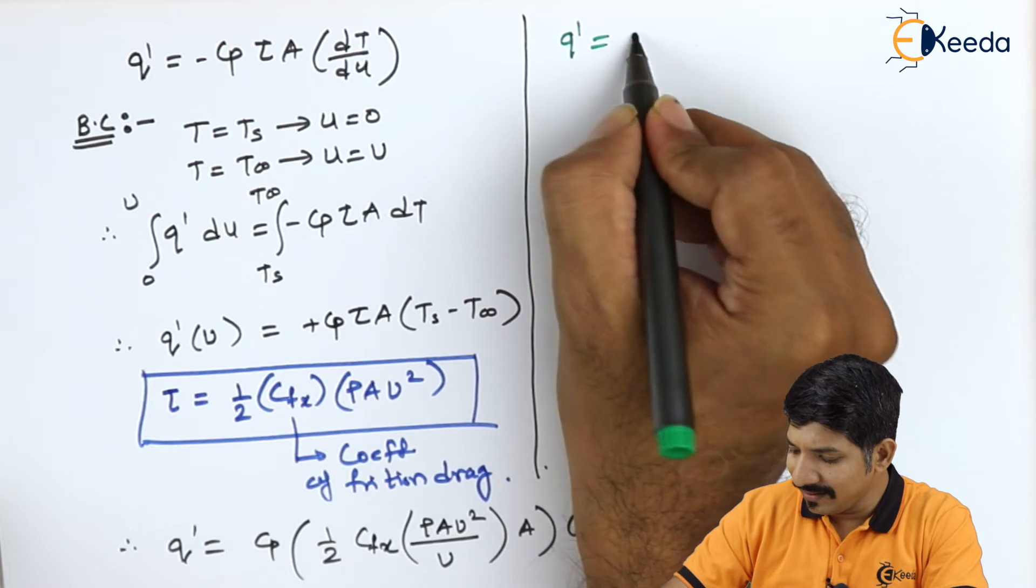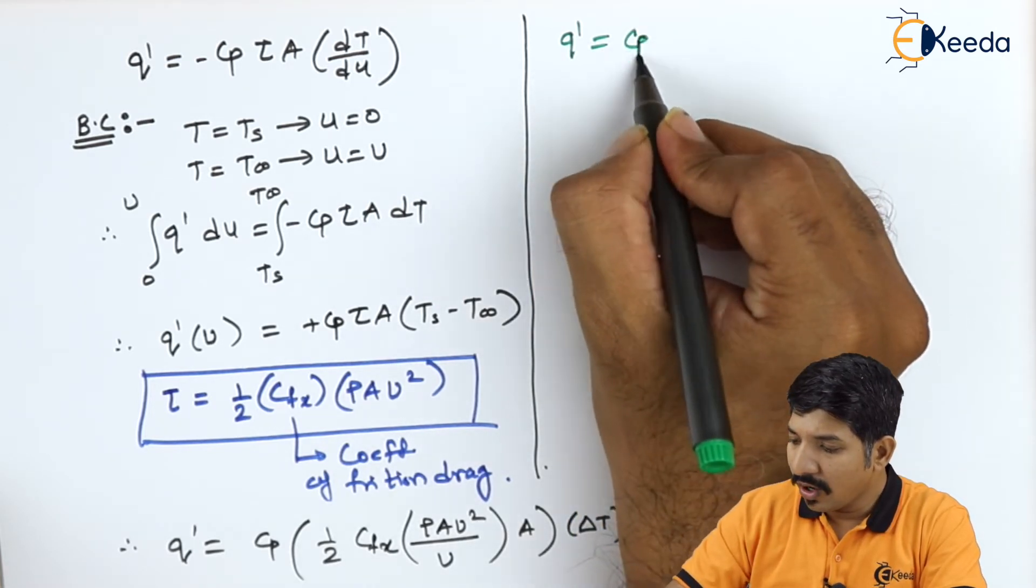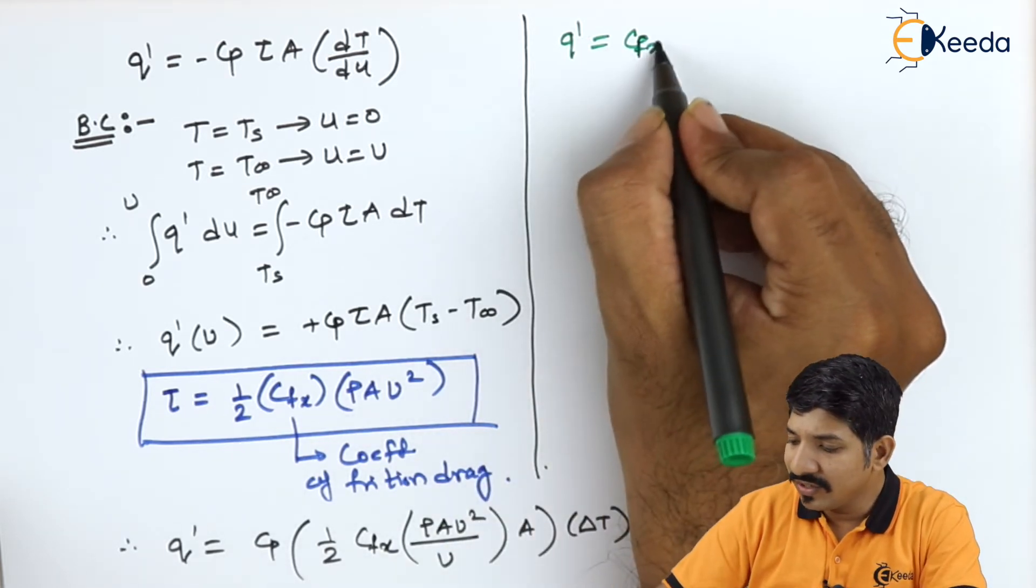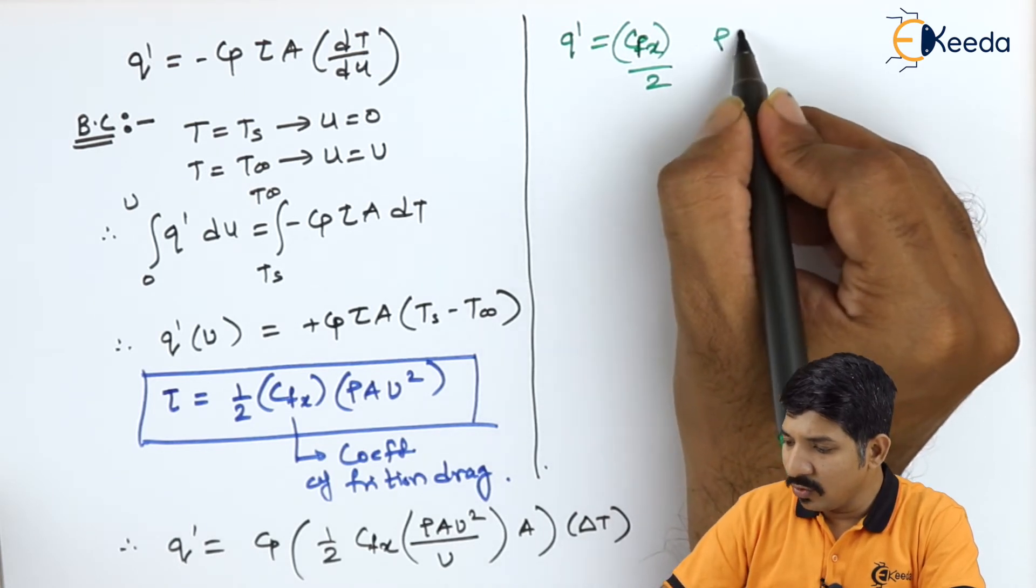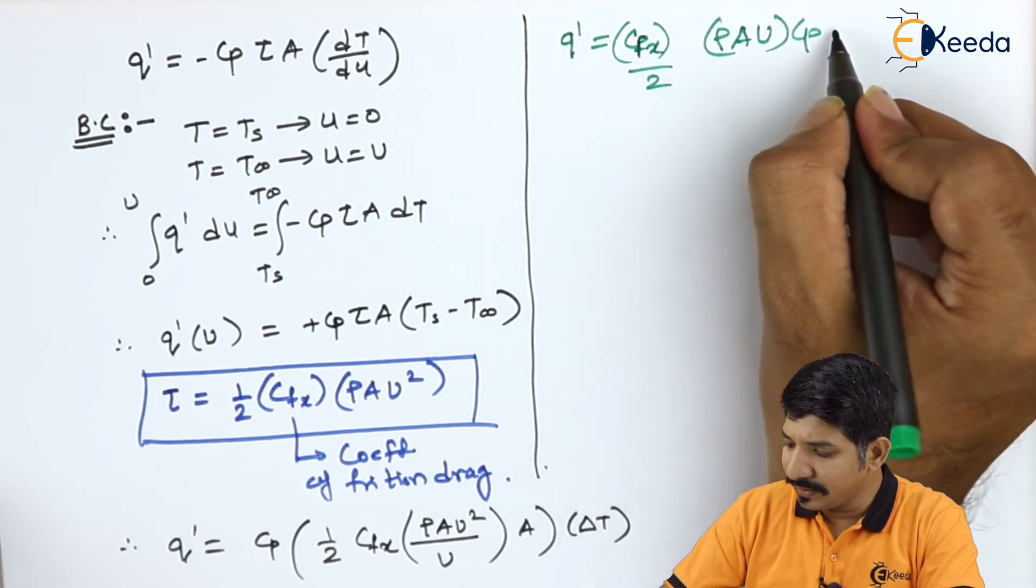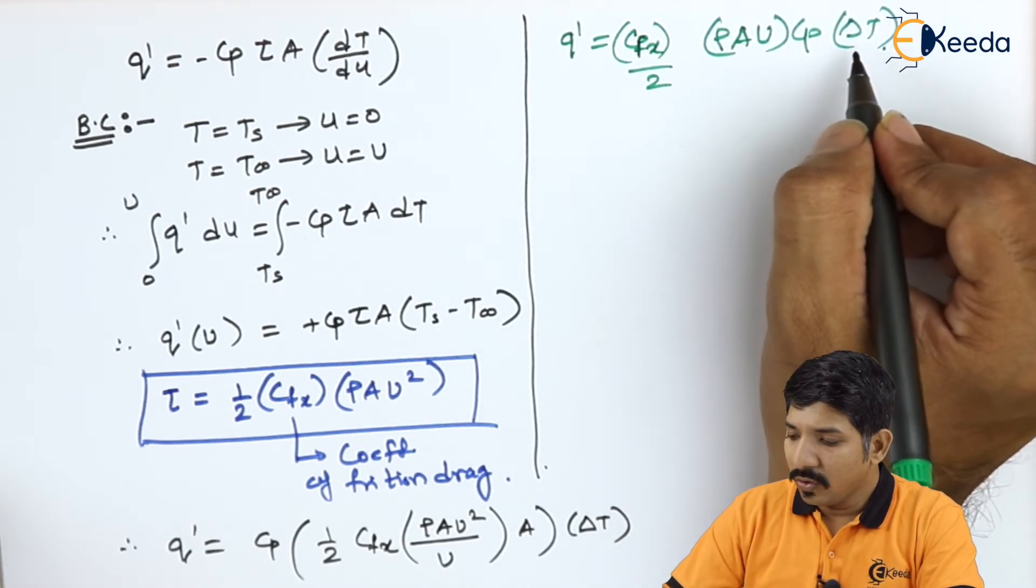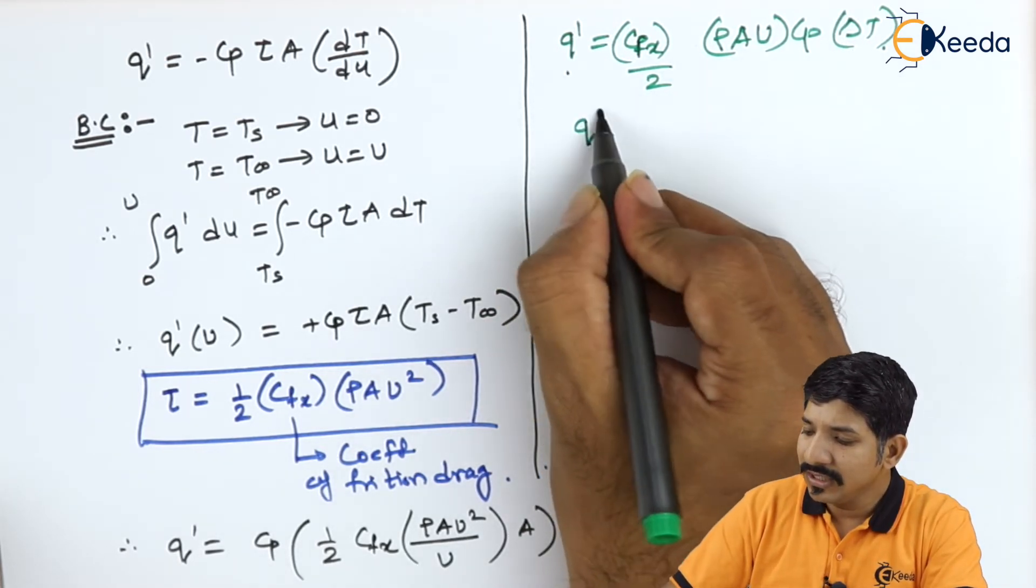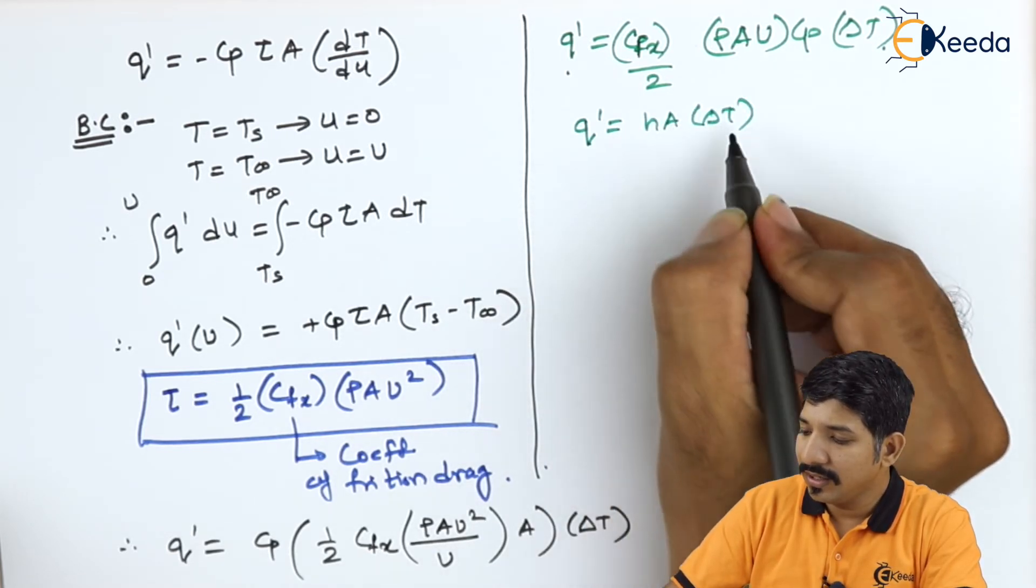Now let us further do the analysis. So we can write this as q' is equal to Cp or let us write this Cfx outside. So Cfx divided by 2 and we are having here rho area into u into Cp into delta T. So at the end of this we can also write down the Newton's law of viscosity that is q' is HA delta T.